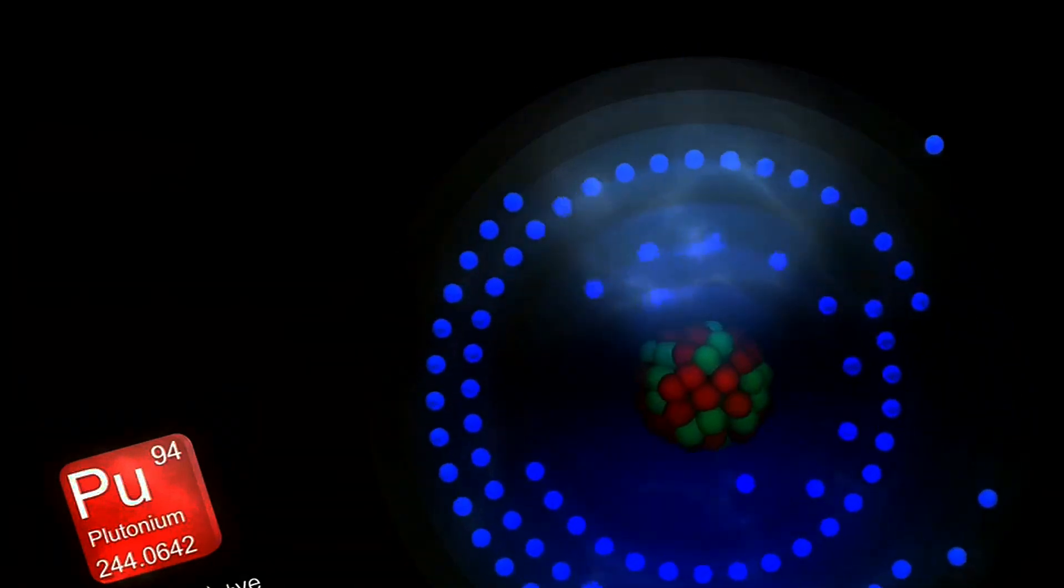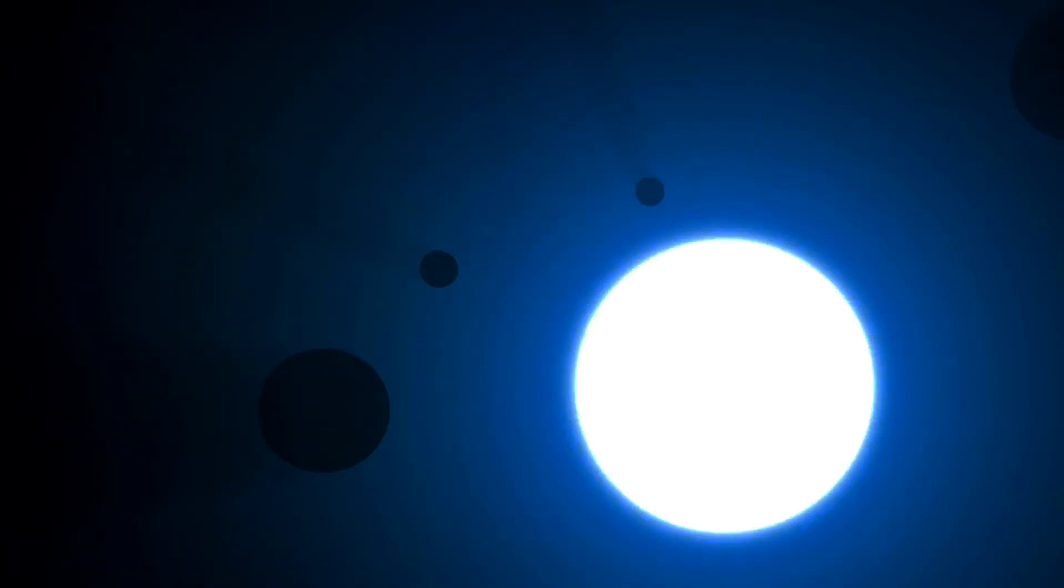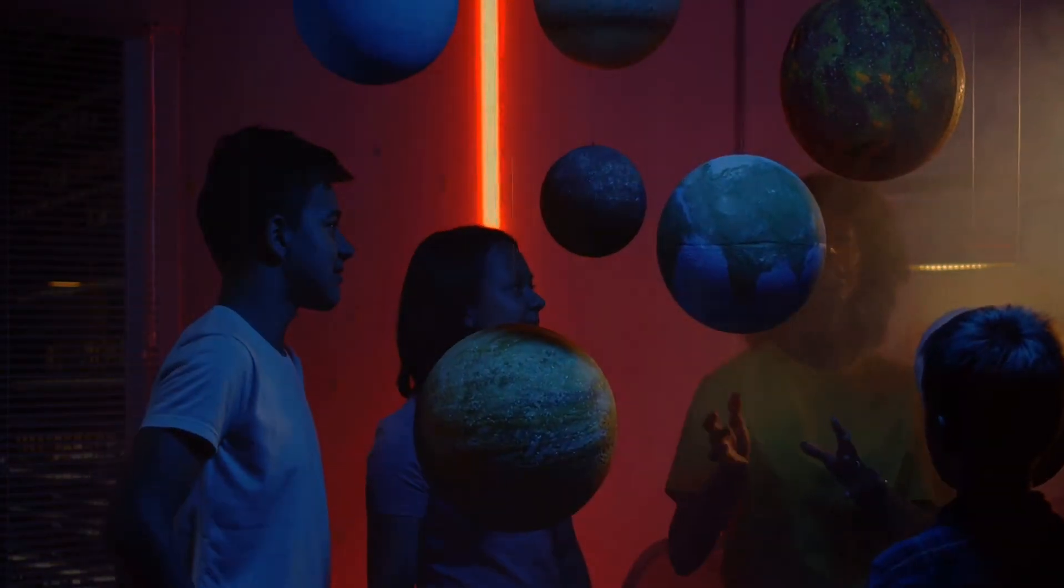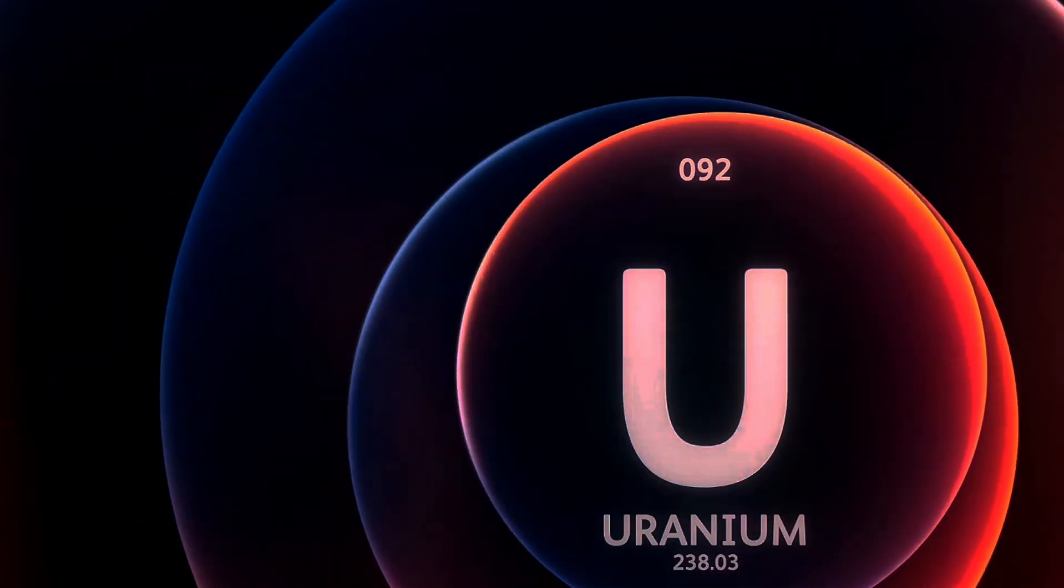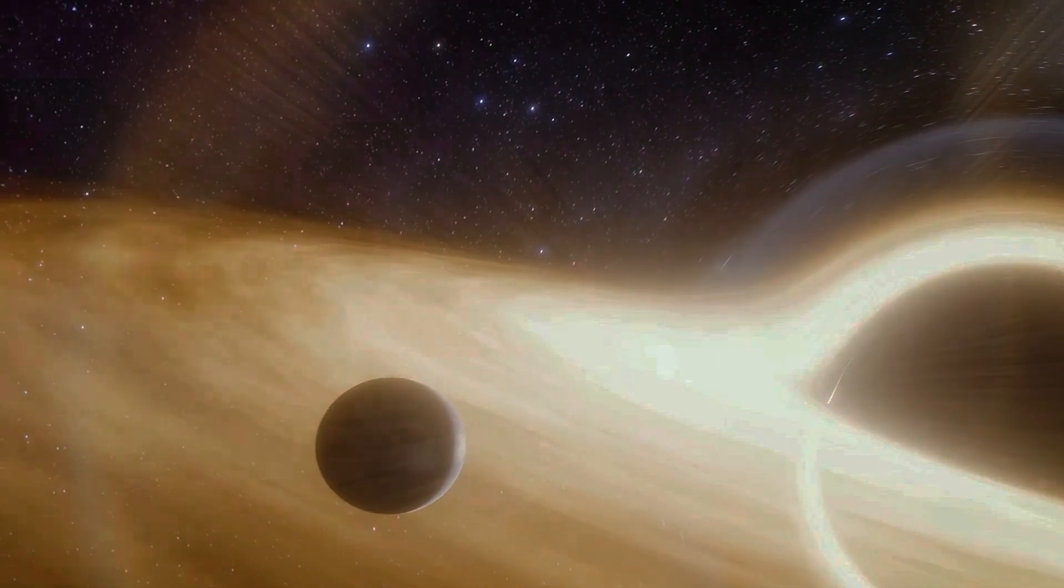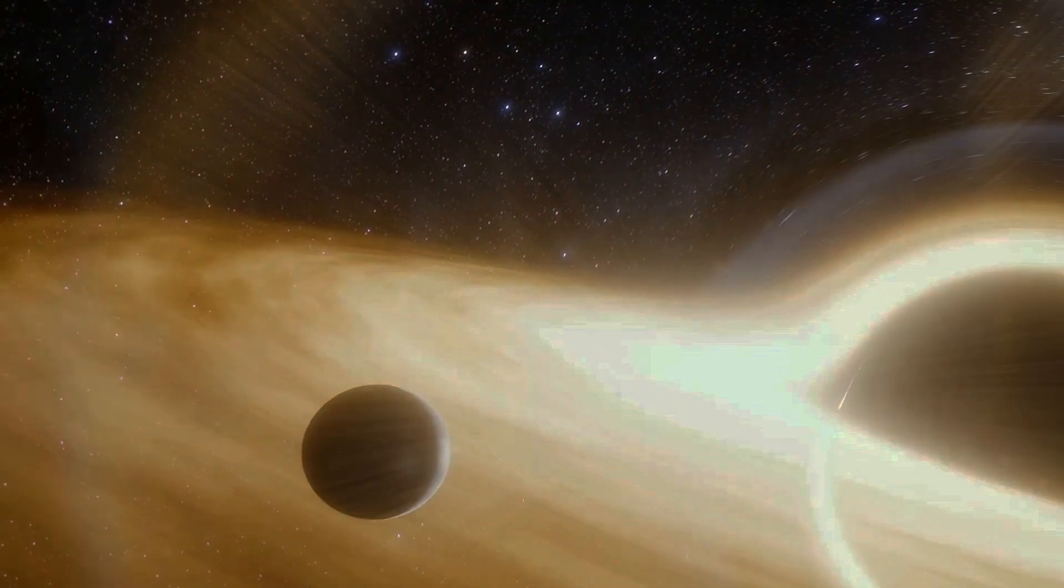In 1912, Niels Bohr proposed his now famous model of the atom, where the electrons orbited around the atomic nucleus like planets orbited the sun. The big difference between Bohr's model and our solar system, though, was that there were only certain particular states that were allowed for the atom, whereas planets could orbit with any combination of speed and radius that led to a stable orbit.